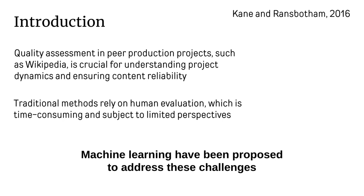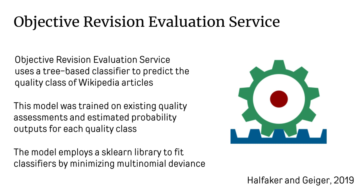To overcome these challenges, machine learning has been proposed as an effective solution. In the Wikimedia project context, ORES is a set of machine learning models that use gradient boosting classifiers to predict the quality of Wikipedia articles. These models are trained on existing quality assessments and estimate probabilities for different quality classes.